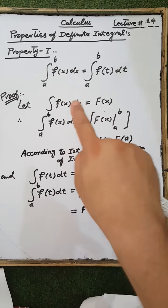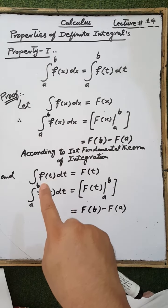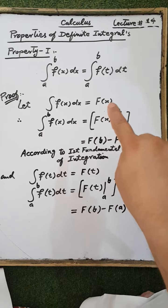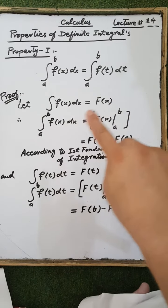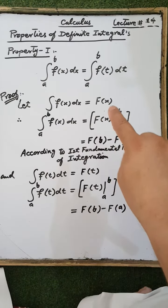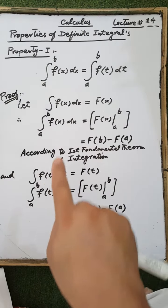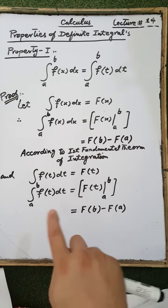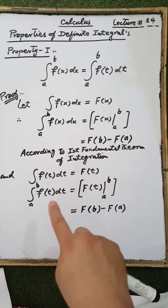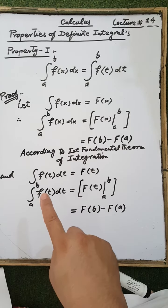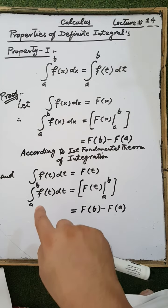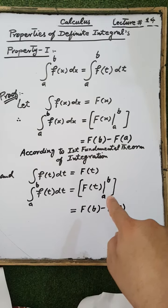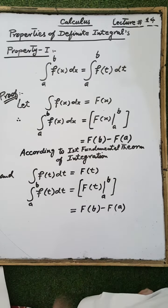If we change the variable x by a variable t, then the integration of f(t) dt is also equal to capital F(t), since the integration of f(x) dx equals capital F(x). Applying the upper and lower limits, the integration of f(t) dt on the interval a to b equals capital F(t) evaluated from a to b, which is equal to F(b) minus F(a).